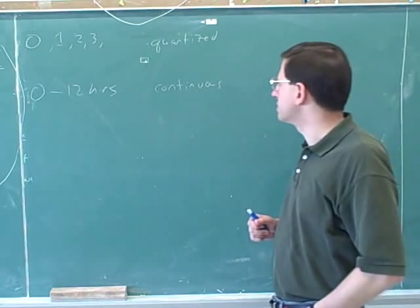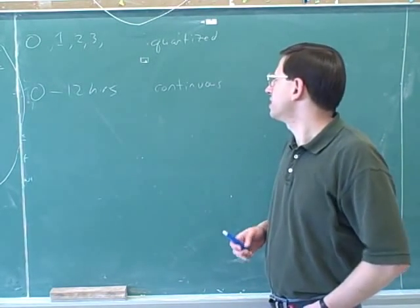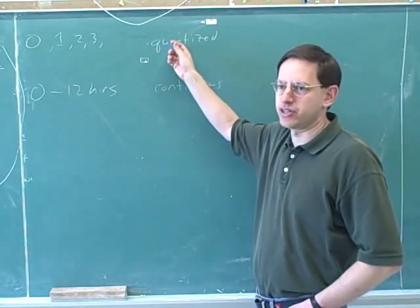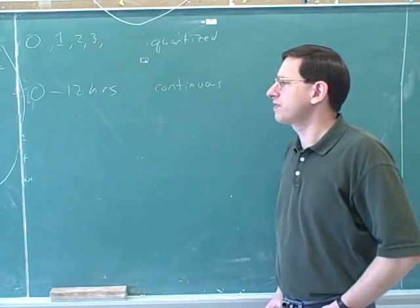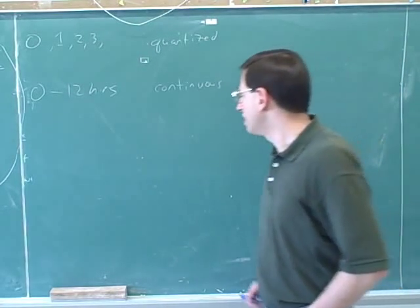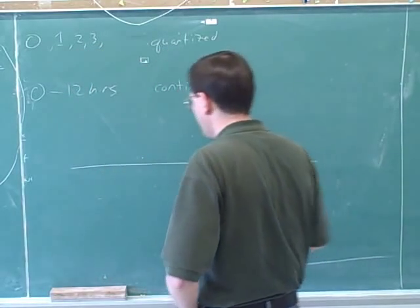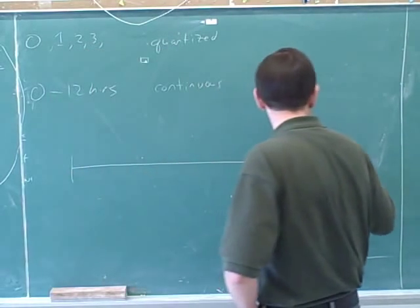Many things that seem continuous are really quantized at the atomic level. The quantization is important. So we're going to have to see examples of both. Why is it that we don't notice in ordinary life how things are quantized?